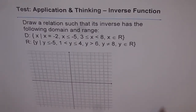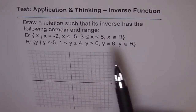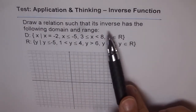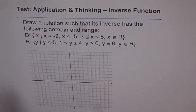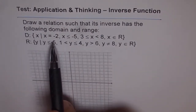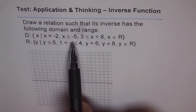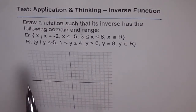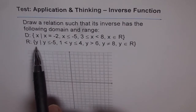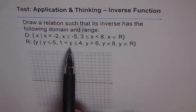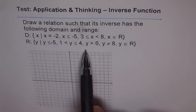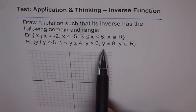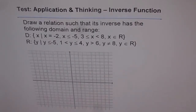Here is an extremely difficult application and thinking problem with inverse functions. Draw a relation such that its inverse has the following domain and range. Domain: x equals minus 2, x less than or equal to minus 5, x greater than or equal to 3 and less than 8, and x belongs to real numbers. Range: y less than or equal to minus 5, y greater than 1 and less than or equal to 4, y greater than 6, y not equal to 8, and y belongs to real numbers.